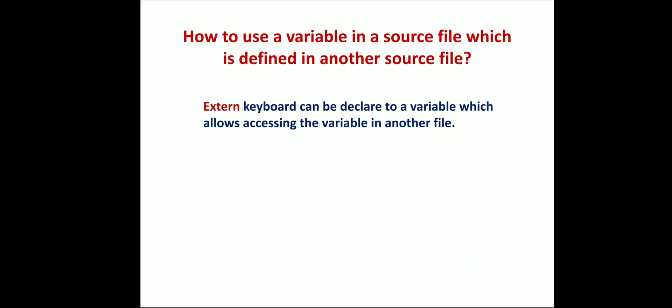By using the extern keyword, you can declare a variable which allows accessing the variable in another file. For example, if you have one file here and another file here, if you want to access some variable within this file, you can just use the extern keyword so that this can be accessible from that.